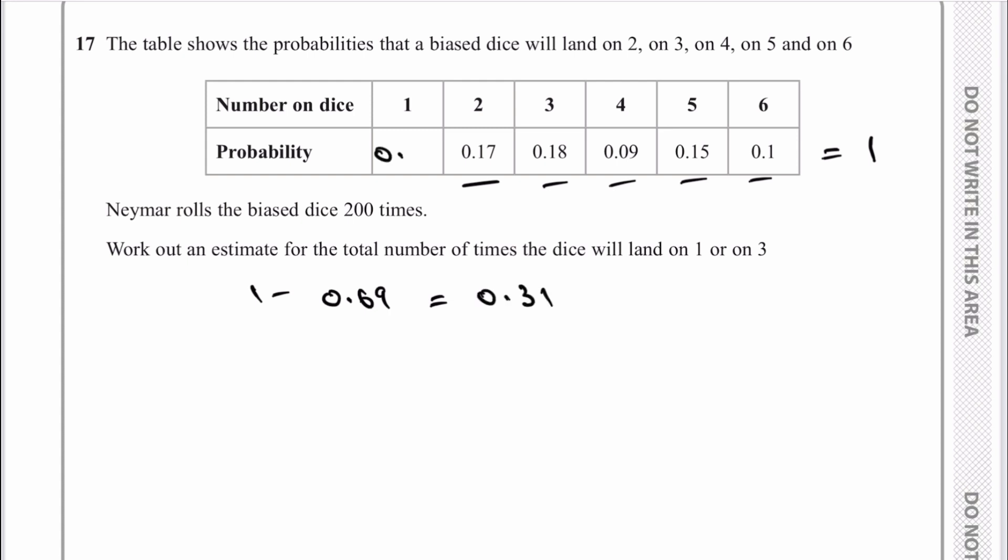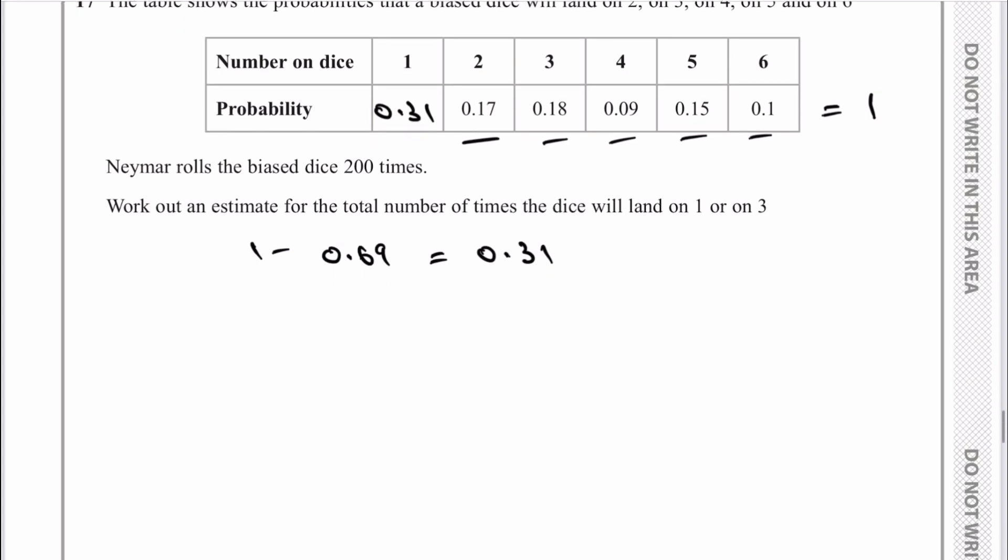If Neymar rolls the dice 200 times, to land on number 1 it's 0.31 × 200 = 62 times. For number 3, the probability is 0.18, so 0.18 × 200 = 36 times. Add those together and we get 98 times that it will land on either a 1 or a 3. Hope that's okay for you, let me know in the comments if you need more work on these sorts of questions.